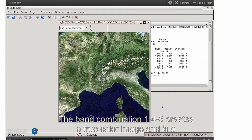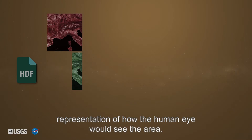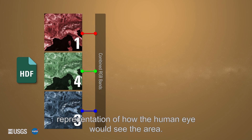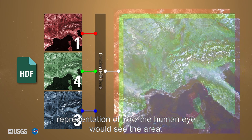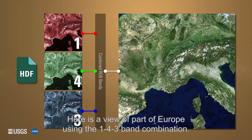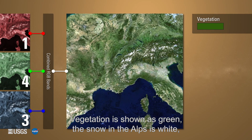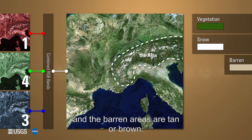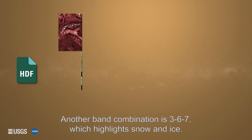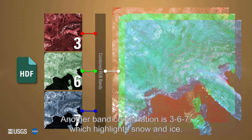The band combination 1-4-3 creates a true color image and is a representation of how the human eye would see the area. Here's a view of part of Europe using the 1-4-3 band combination. Vegetation is shown as green, the snow in the Alps is white, and the barren areas are tan or brown.